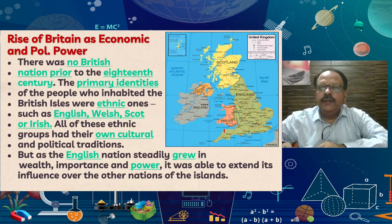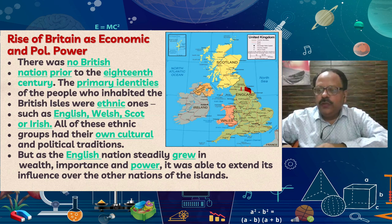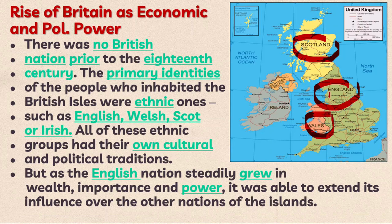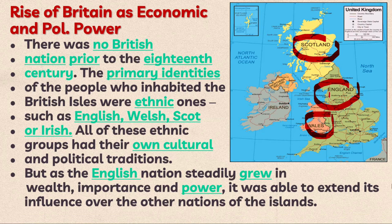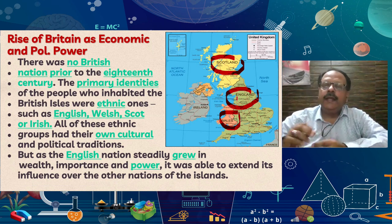As you can see on the map, before the 18th century there were different parts — England, Scotland — and their ethnic composition, languages, and cultures were quite different from each other.